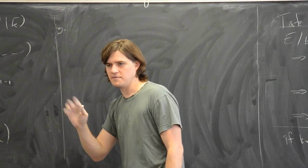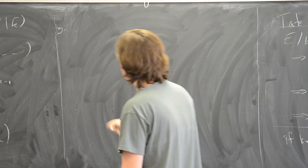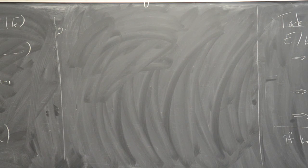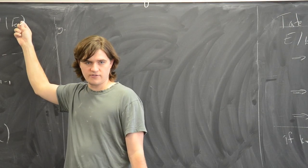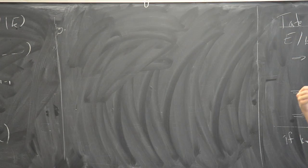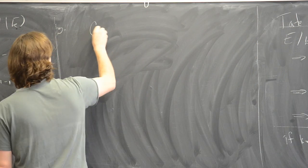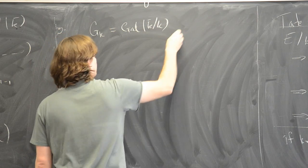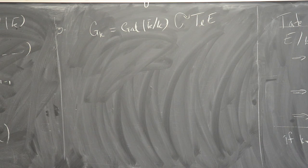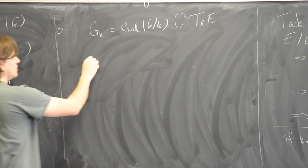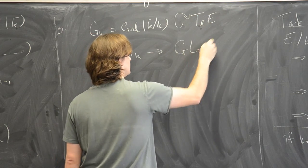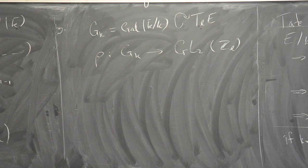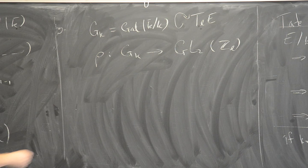Here's something interesting that happens with the Tate module. If k is not algebraically closed, these torsion points typically won't be defined over k — they'll be defined over some extension — and the Galois group acts on them. So the absolute Galois group G_k acts on the Tate module, and you can regard this as a representation ρ: G_k → GL₂(ℤₗ). Associated to an elliptic curve, you get this two-dimensional Galois representation — a very important idea. We'll come back to it and say more about it later.